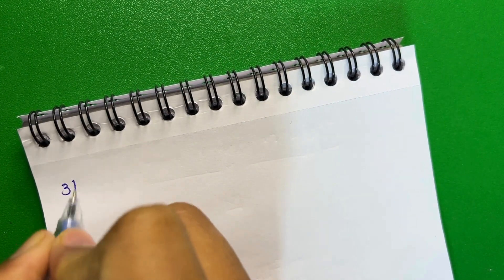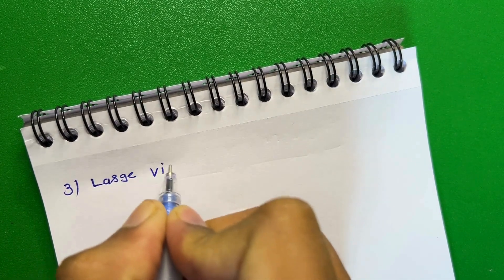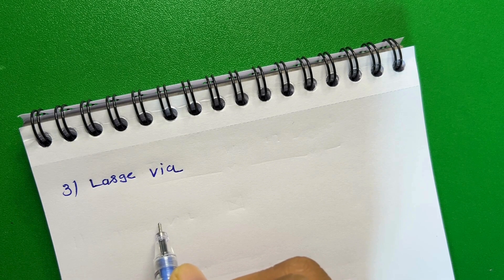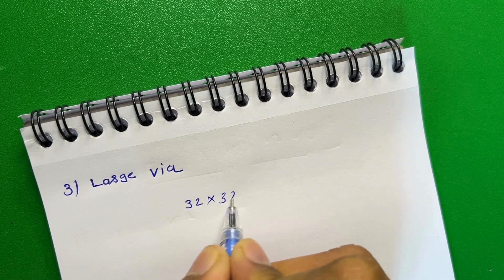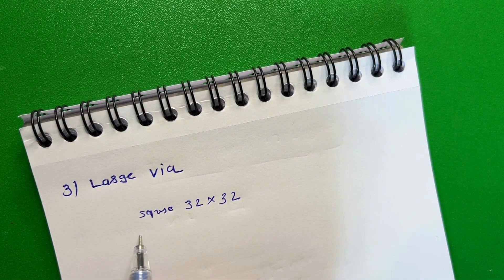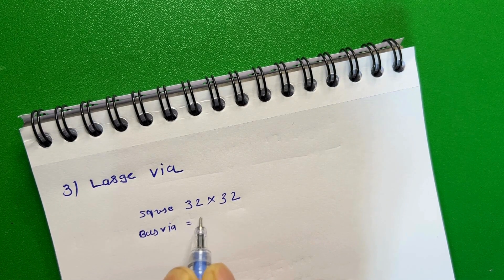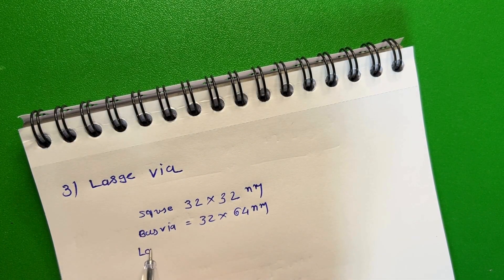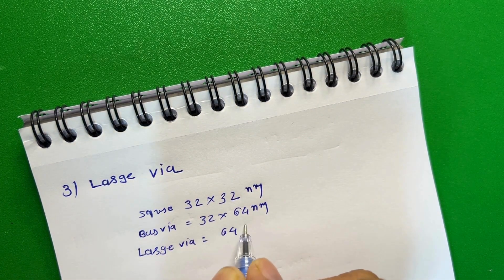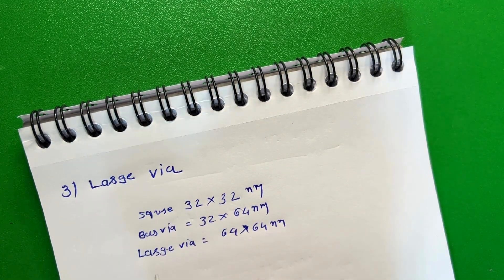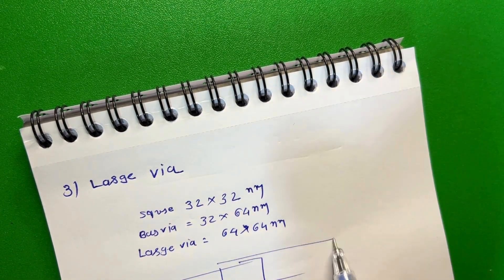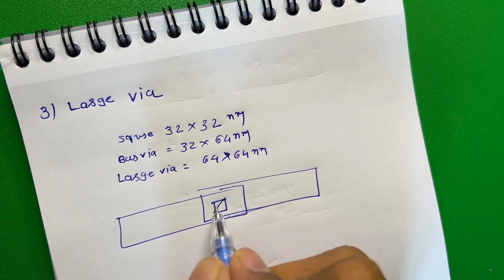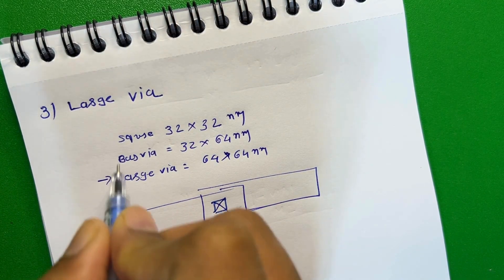Now the third type of wire is a large wire. Large wire means it is bigger than both the square wire and the rectangular wire. Let's assume square wire size is 32 by 32 nanometer — in the case of large wire it will be 64 nanometer by 64 nanometer. So wherever possible, use large wire. This is a very good wire compared to square wire and bar wire.